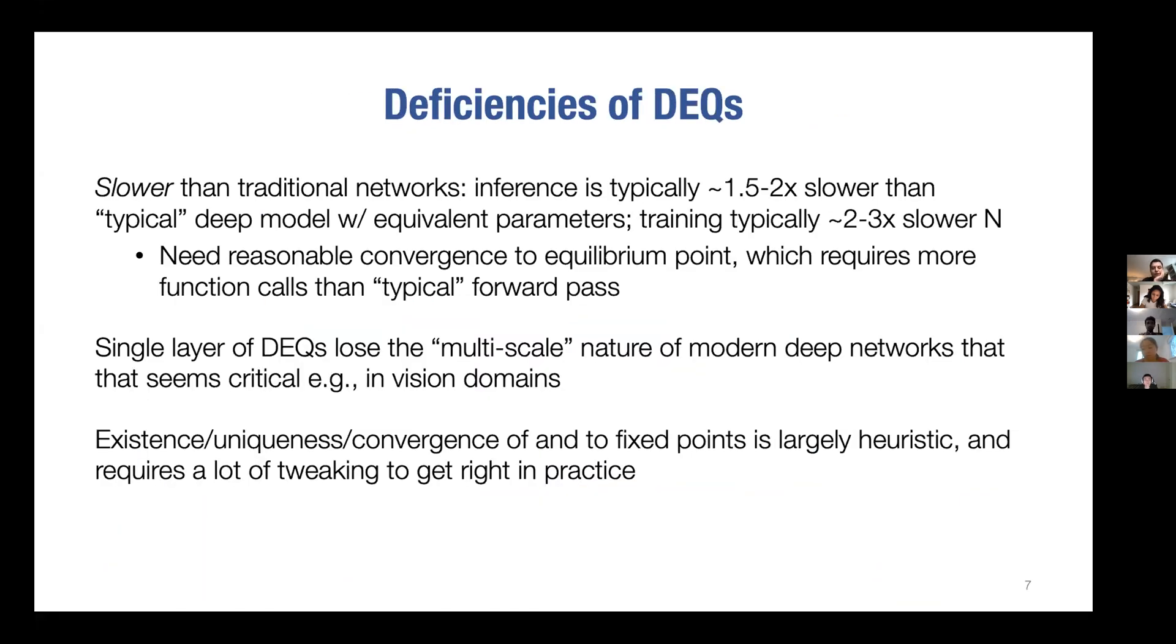But there are some problems here. The first problem is that it's slower than traditional networks, which is unfortunate because actually finding that equilibrium point ends up taking more time than the typical number of iterations you go through a network. The second thing is that there do seem to be some fundamental problems for domains like vision. Vision seems fundamentally hierarchical and there's a real benefit from having not just hierarchies of depth but also different scales of your image. The other thing is that it's really hard to say from a theoretical standpoint when these fixed points actually exist or are unique. We want to have some better understanding of these properties.